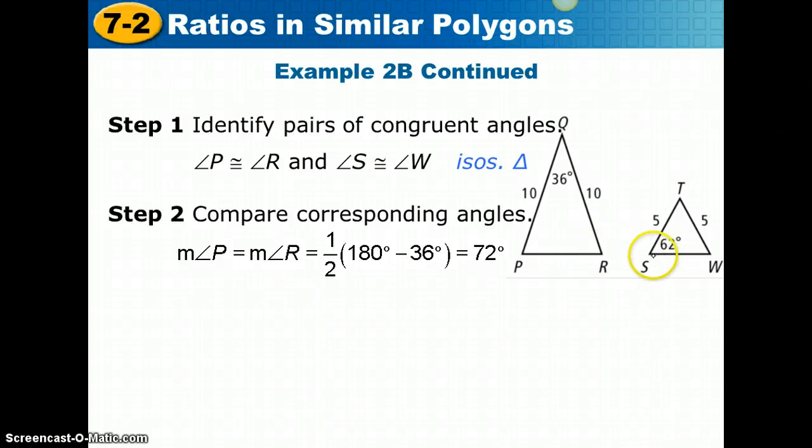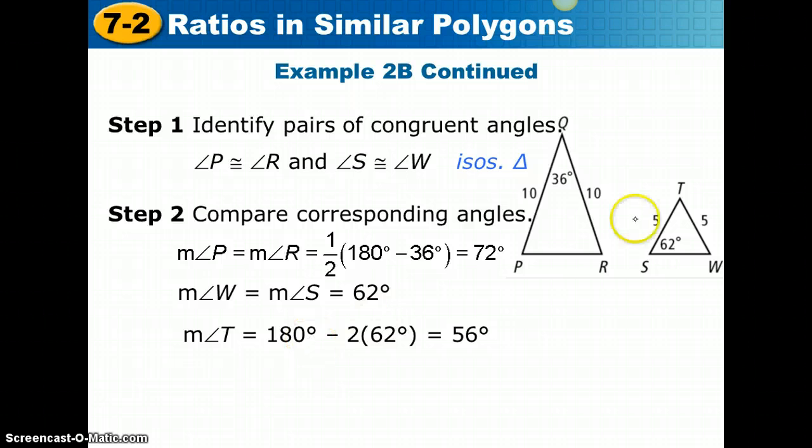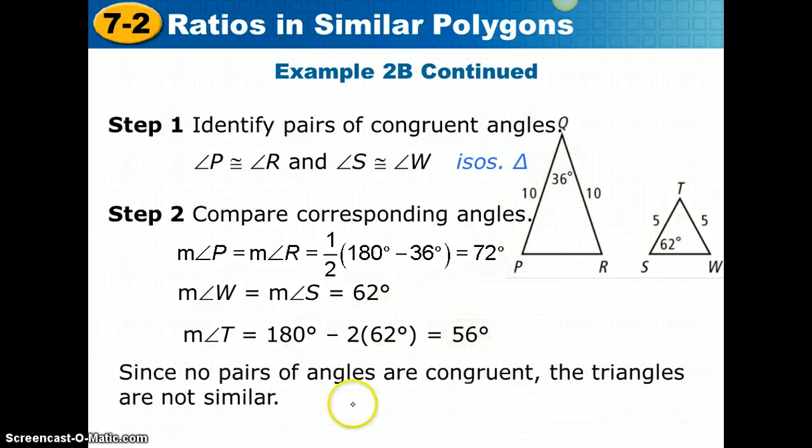But you'll notice the corresponding angle to P is S, which is 62 degrees. The measure of angles W and S are 62 degrees. That means the measure of angle T is 56, which is not the same as 36. So no pairs of angles are congruent, which means these triangles cannot be similar. We don't even have to check side lengths. Even though the side lengths are proportional, the angle measures are not congruent, so these are not similar triangles.